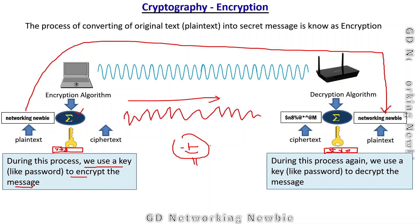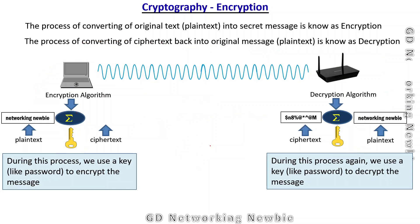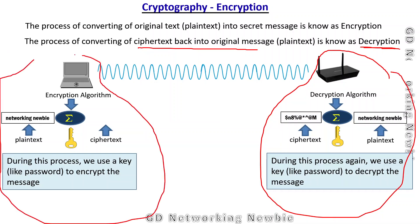The process of converting this ciphertext back into the original message is known as decryption. So at the receiving end we have decryption, and at the transmitting end we have encryption of our message, with the code — not the actual message — in between.